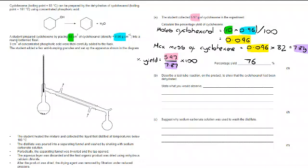Moving on to part B, describe a test tube reaction on the product to show that the cyclohexanol had been dehydrated. Well, what we've got to look at here is that the cyclohexanol being dehydrated would make cyclohexene. So we're looking for a test for alkenes. That makes it a little bit more straightforward. We add bromine water. And if there is an alkene present and dehydration has taken place, the bromine water will decolorize or change from brown to colorless.